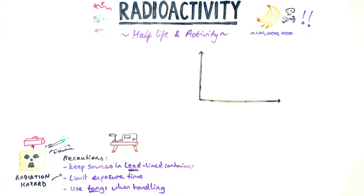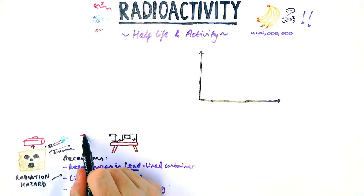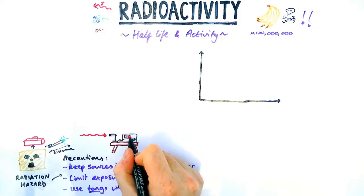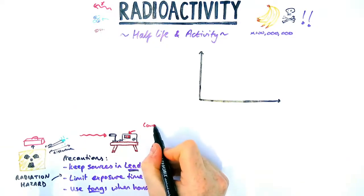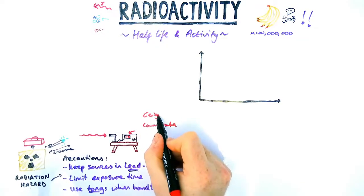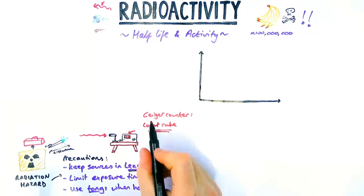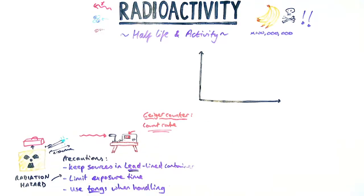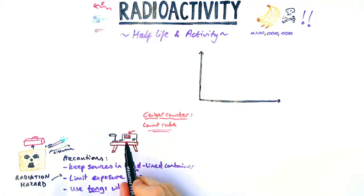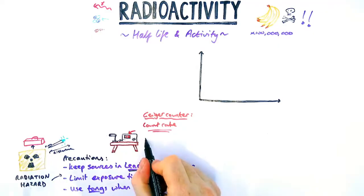If we were to point our source in the direction of this equipment here, you'd find that it gave a reading. Now this machine is called a Geiger counter, so G-E-I-G-E-R, and it measures the count rate.